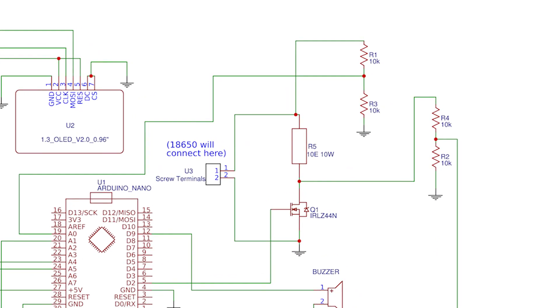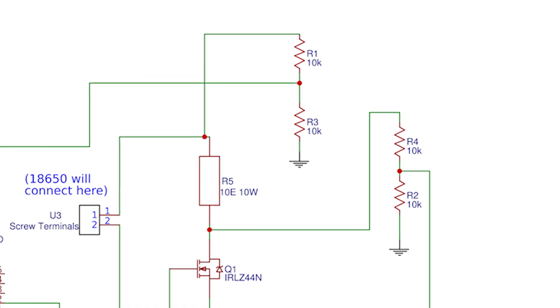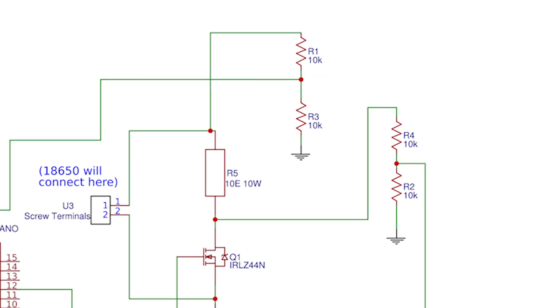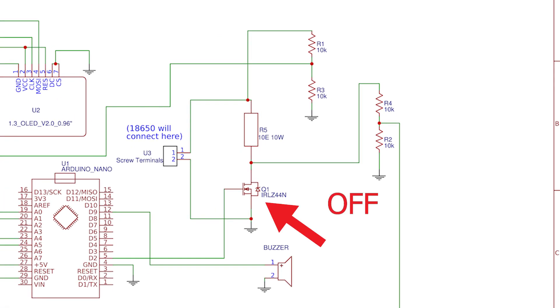And here is how this circuit works. First the Arduino measures the voltage drop created by the 10 ohm resistor. If it is higher than 4.3 volts it will turn off the MOSFET and display high voltage. And if it is less than 2.9 volts it will display low voltage.